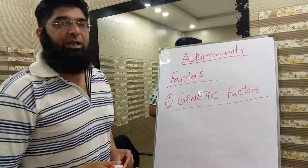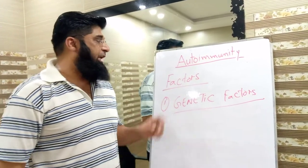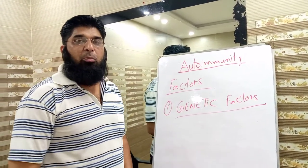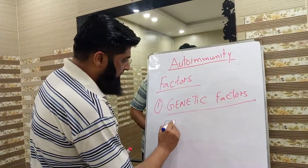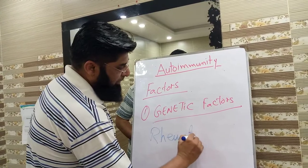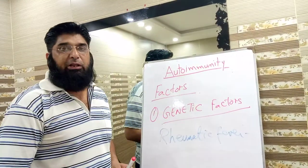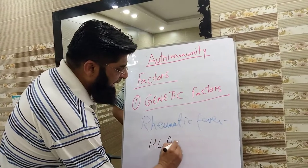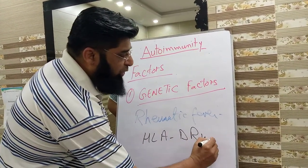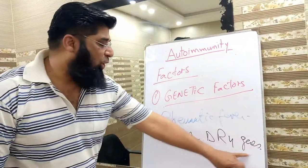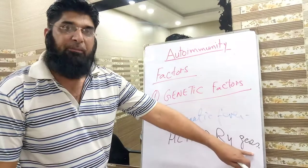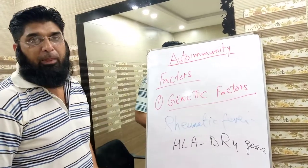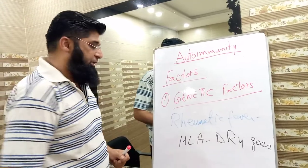Many genetic factors are involved in the incidence of autoimmune diseases in any individual. For example, rheumatic fever is associated with the presence of HLA-DR4 genes. The presence of HLA-DR4 genes makes any individual more receptive to rheumatic fever, which is an autoimmune disease.